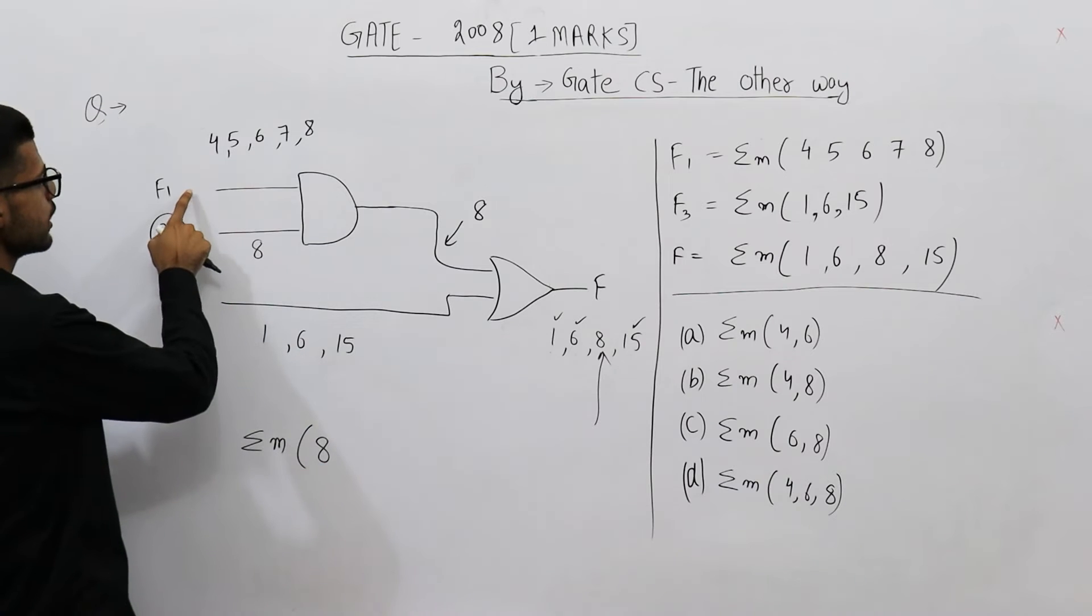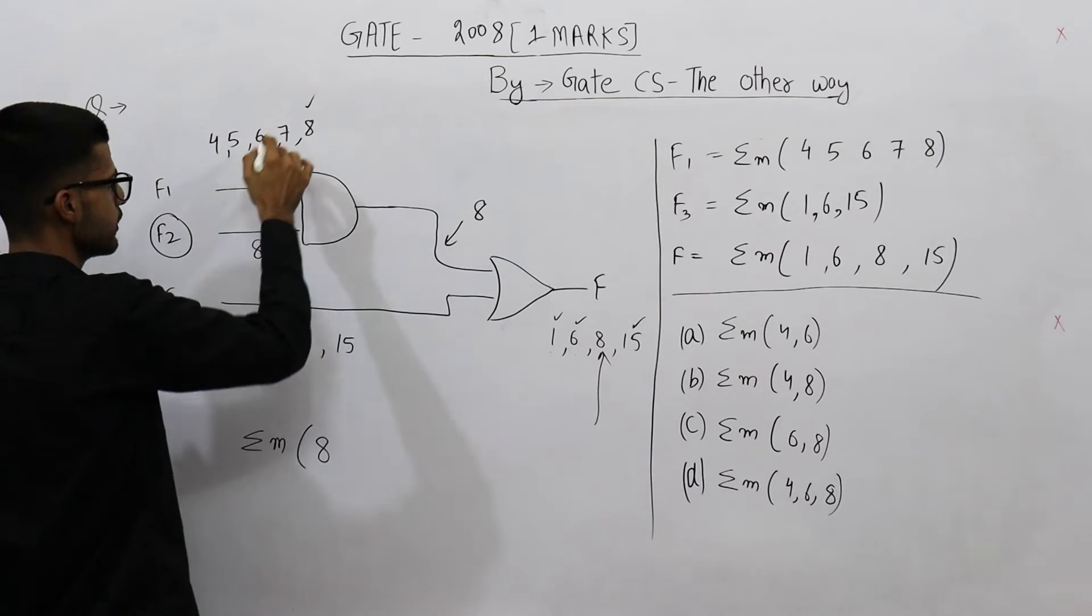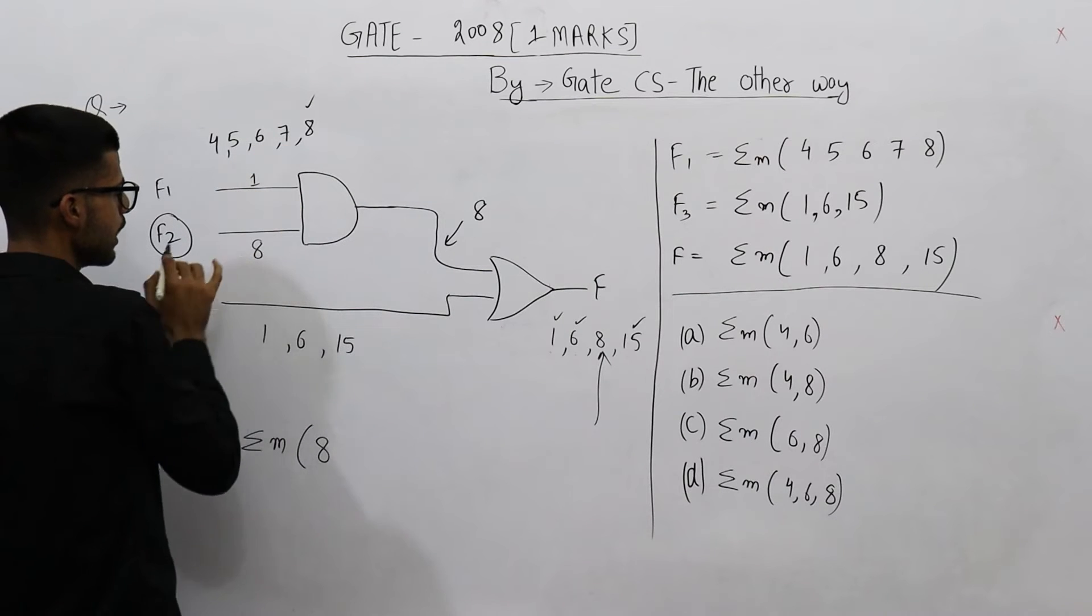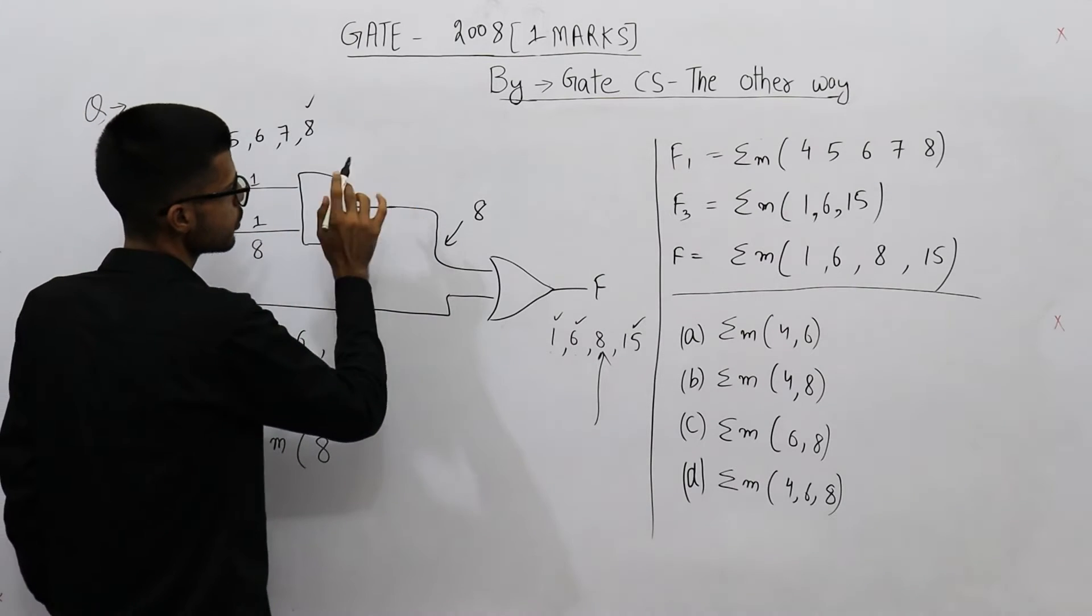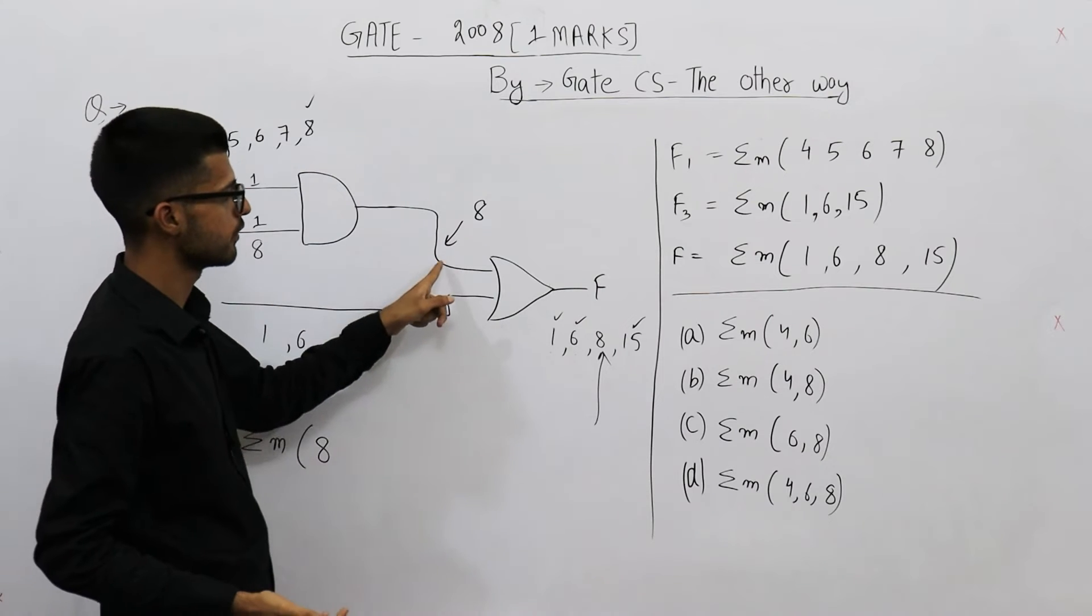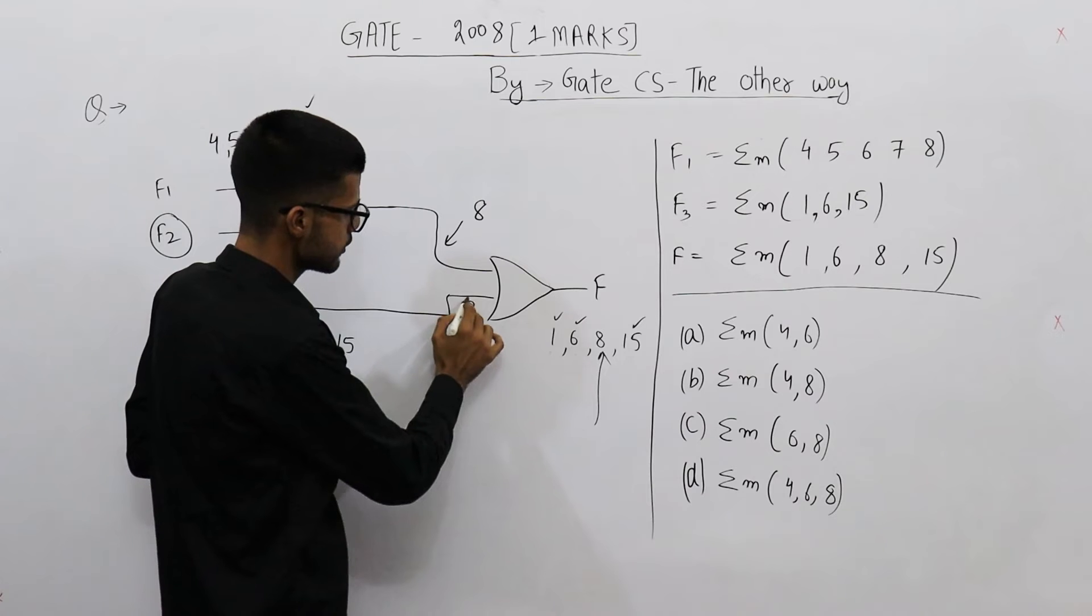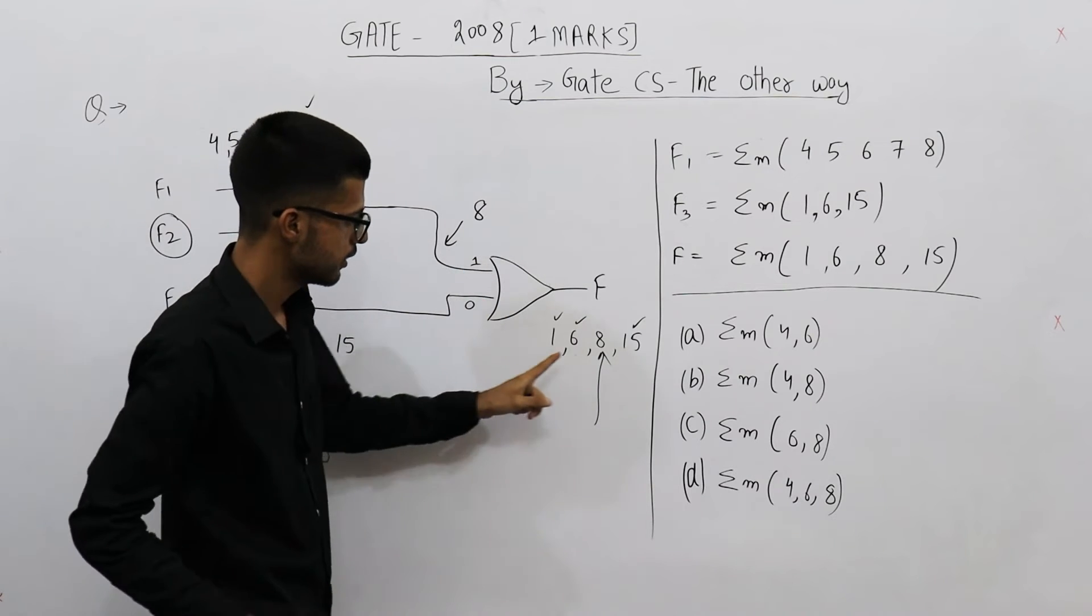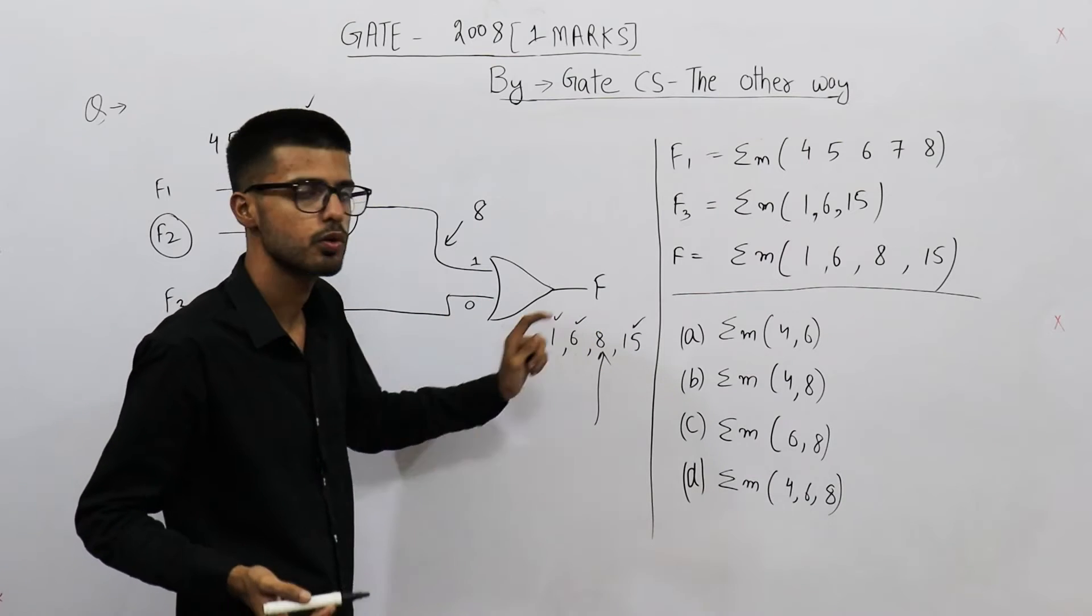So whenever the input is 8, f1 will output high, that means this wire will contain 1. f2 will output high, that means this wire will contain 1. Both of the inputs are 1, so this one will also contain 1. So on 8, we will have a 1 here. Now on 8, this wire contains 0, this wire contains 1. So any one of the inputs of the OR gate is 1, so it will output high.